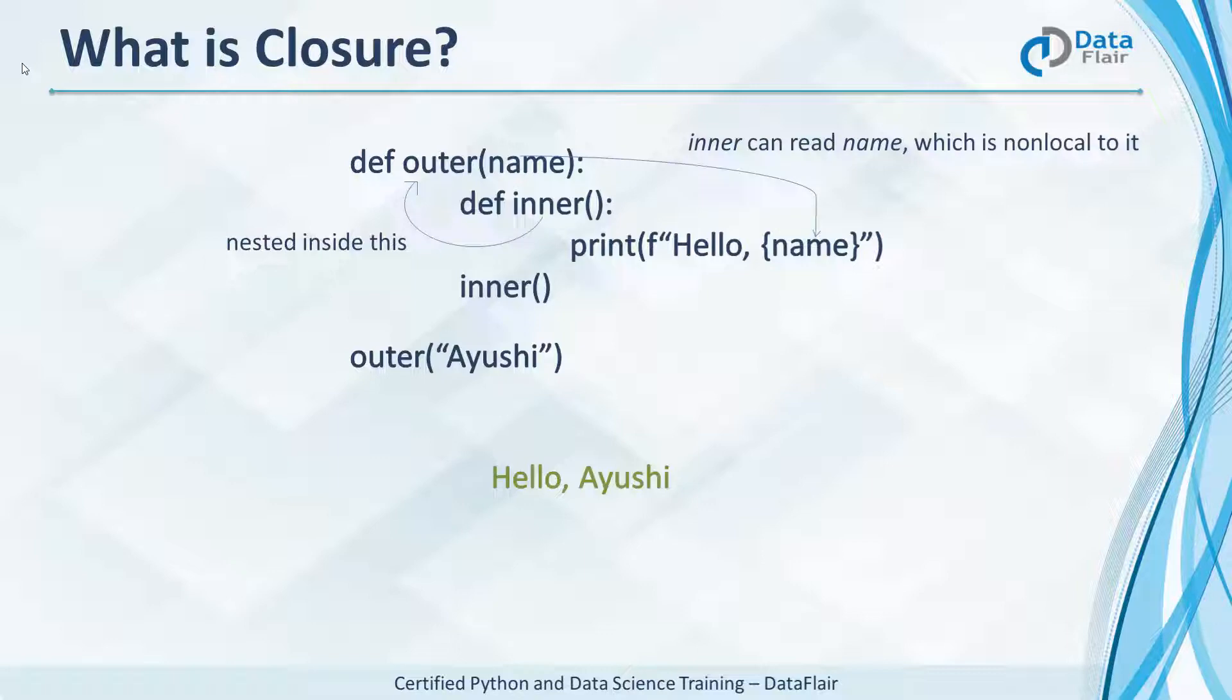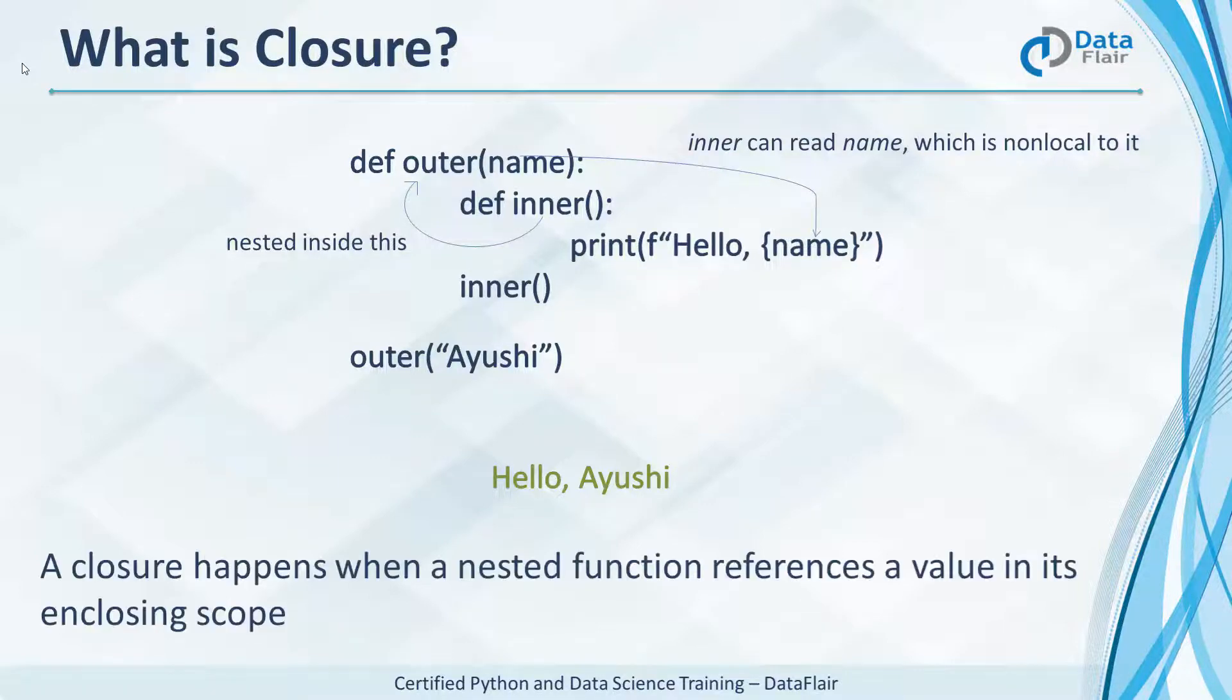Remember when we discussed variable scope in Python? If this confuses you right now, you should revisit the lecture on variable scope. Anyway, a closure happens when a nested function references a value in its enclosing scope as inner references name which really belongs to outer.